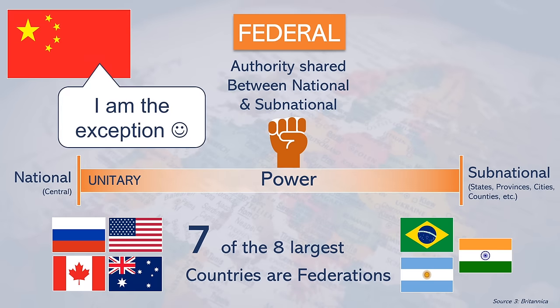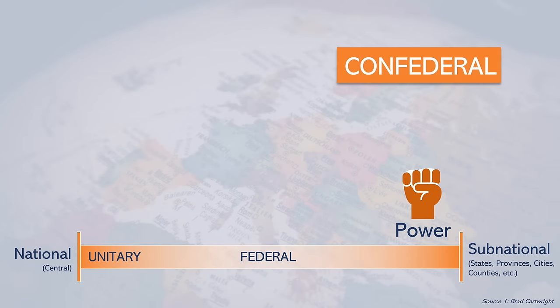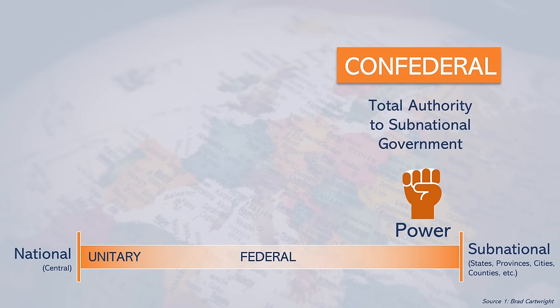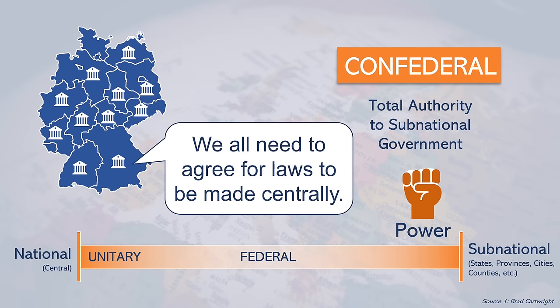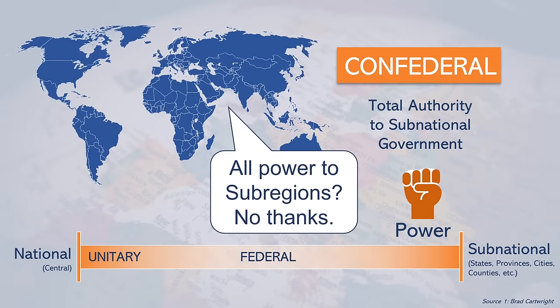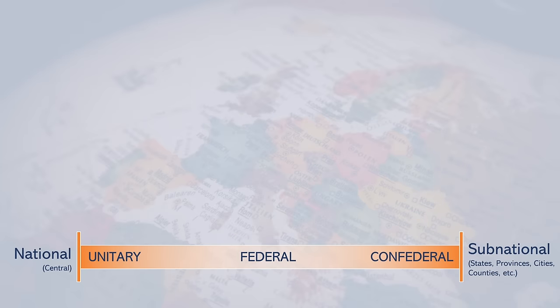Then there is a confederal model of government. In this model, all the power resides with the independent states, or the subnational governments. The central government can only act if all subnational governments find common ground unanimously. Currently, there are no pure confederal countries in the world. So what about the EU?